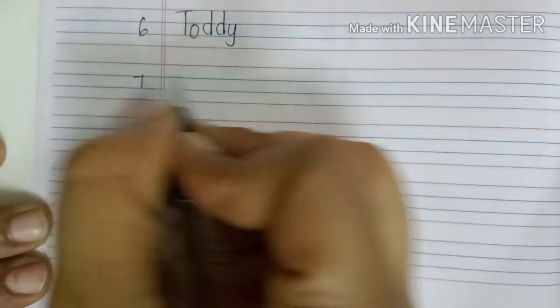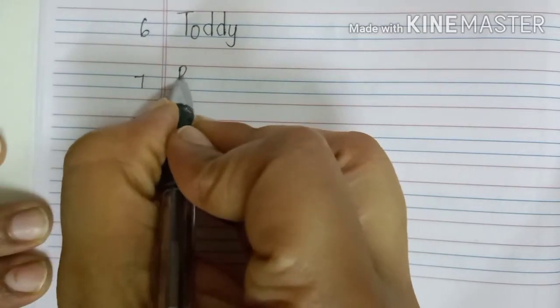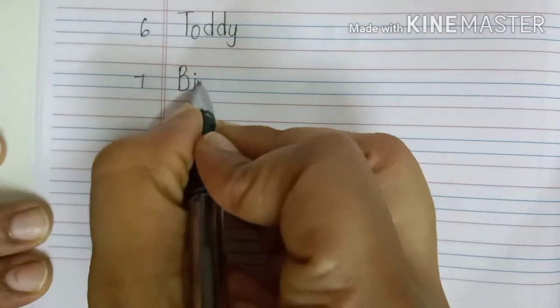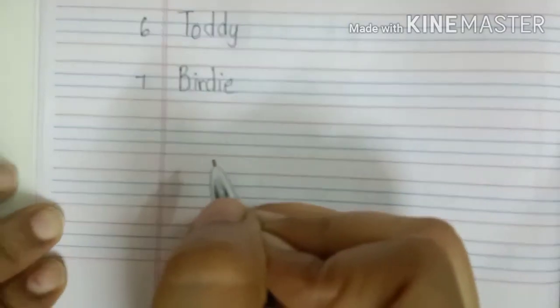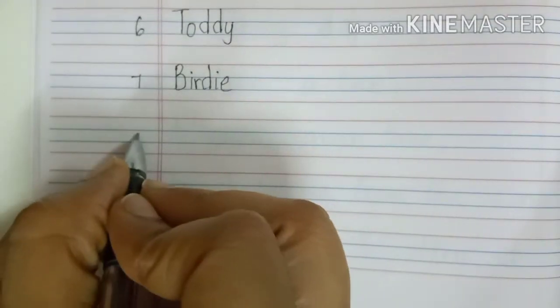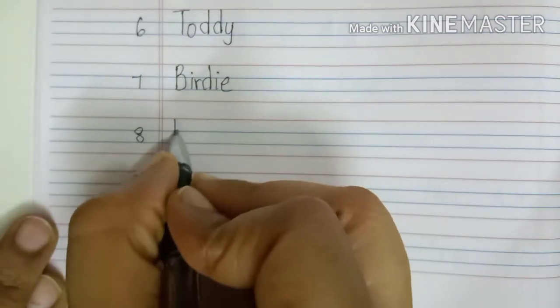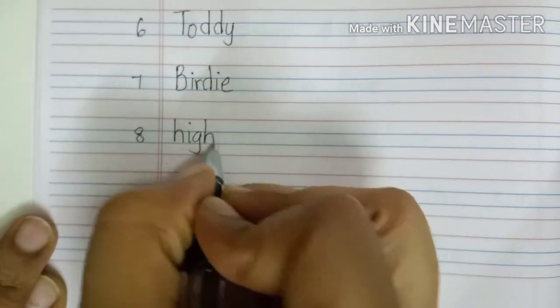Seventh one will be, again name of a bird. So, we will write starting with the capital letter, B-I-R-D-I-E, Birdie. Eighth one will be, H-I-G-H, High.